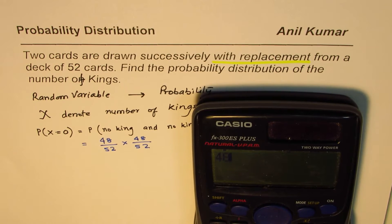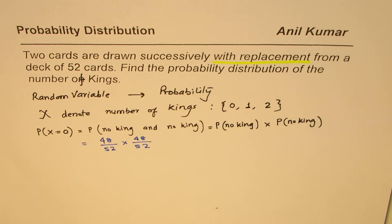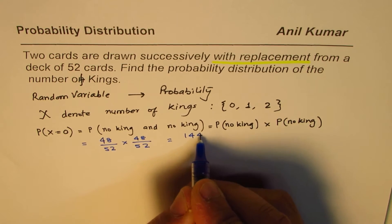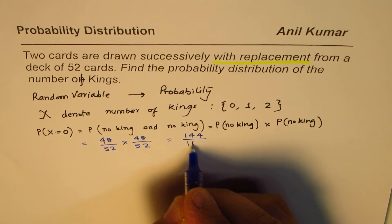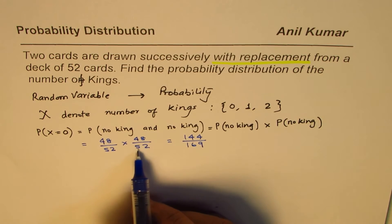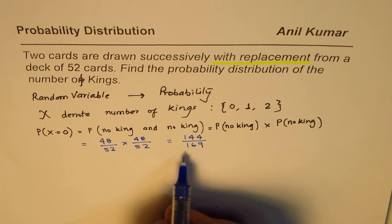That becomes the probability of drawing no king when two cards are drawn with replacement. It is 48 times 48, divided by 52, divided by 52. It is 144 over 169. 12 times 4, 13 times 4, and that gives you the result.